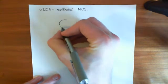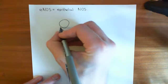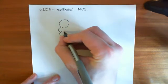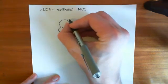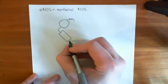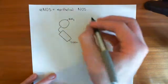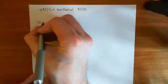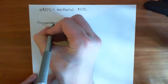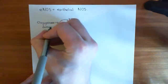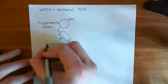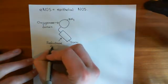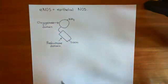So if we denote a single eNOS protein, it has two domains: an oxygenase domain and a reductase domain. The amino terminus is at one end and the carboxylic acid terminus at the other. The oxygenase domain is shown as a circle and the reductase domain as a rectangle. On its own, this is not a functional enzyme which can create nitric oxide.